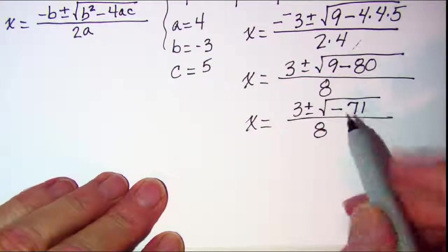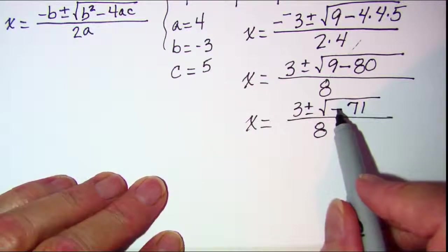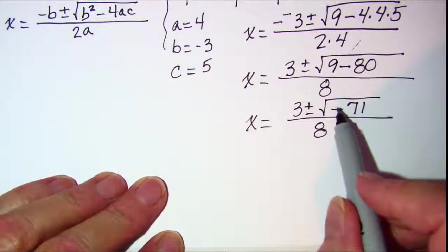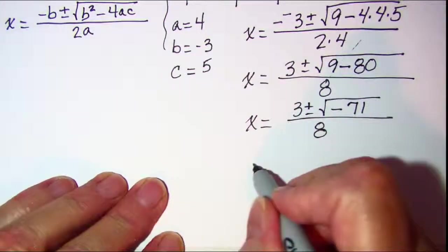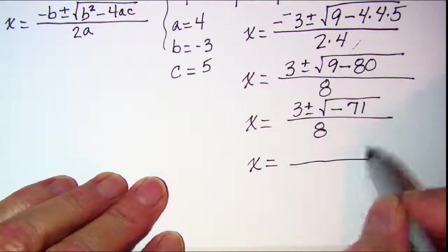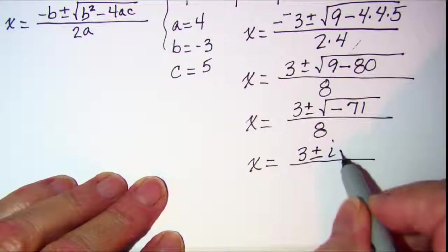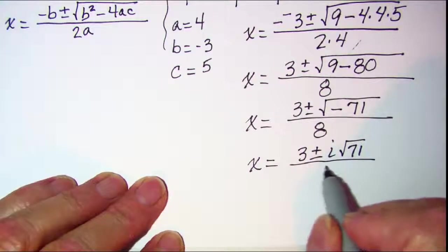And the only thing that I can do here, I see a negative under the square root, which means I have an imaginary number. I can bring that out and put an i in front of the radical, so I have 3 plus or minus i root 71 over 8.